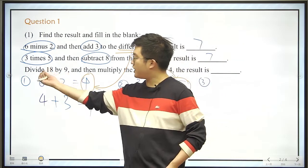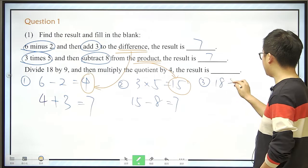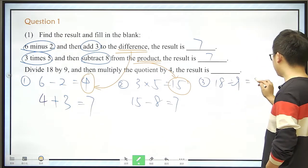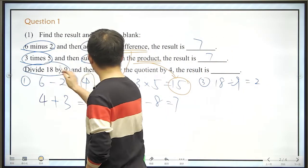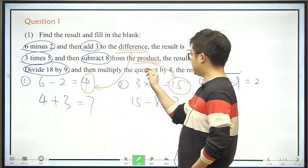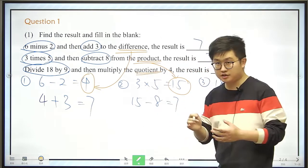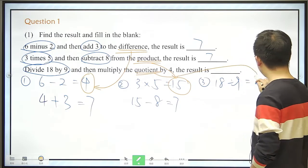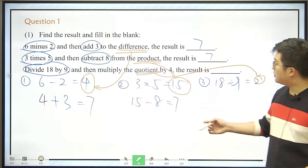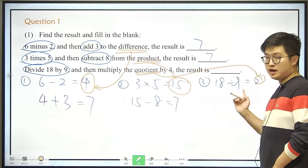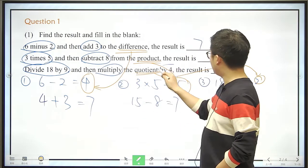And the third one here, we should divide 18 by 9, and that is 18 divided by 9. We know the result is 2. And then we should multiply the quotient. So what is this? This is the result of a division. Here it is 2.